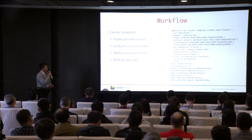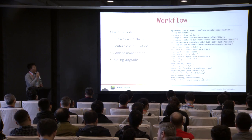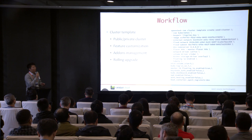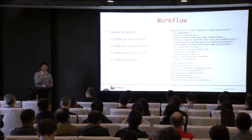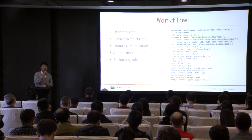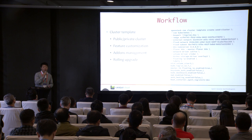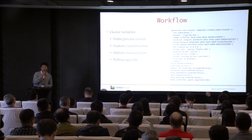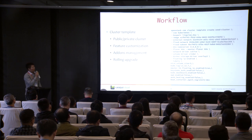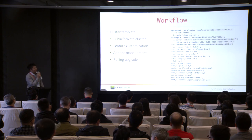The last important thing we should know about the template is the cluster rolling upgrade. The rolling upgrade feature in Magnum is initiated by providing a new cluster template. For example, if you want to upgrade the Kubernetes version from v1.12 to v1.13, we need to create a new cluster template. We could keep everything except the kube tag in the label, and Magnum will trigger the rolling upgrade process automatically.